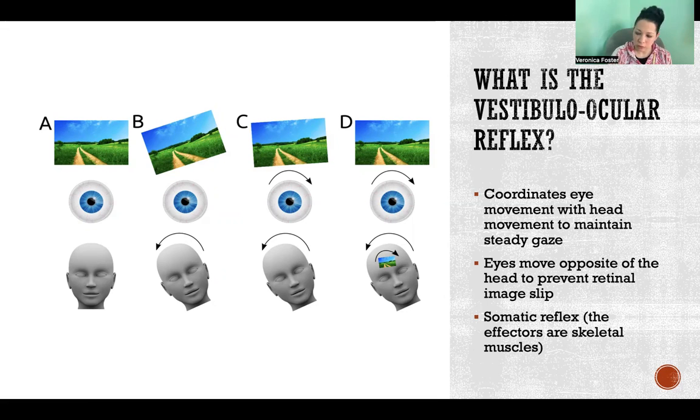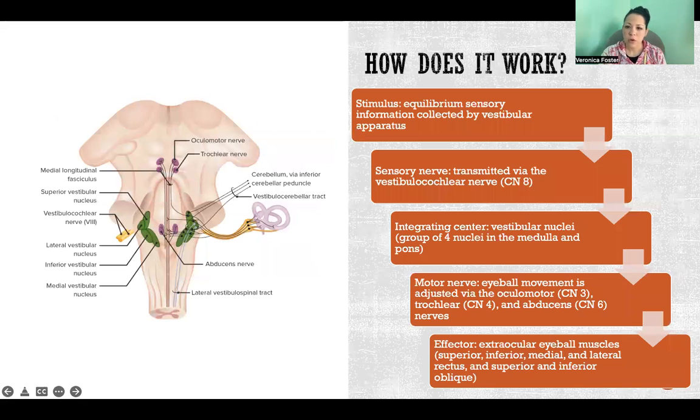It's a somatic reflex because the effectors are skeletal muscle. So how does this work? I'm going to take you through the reflex arc like we could with any type of reflex. With any reflex, we start with a stimulus.